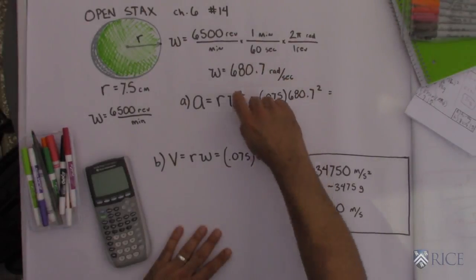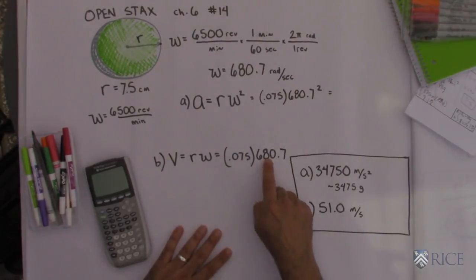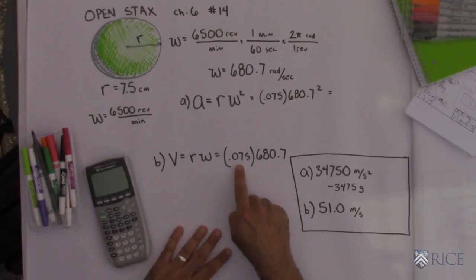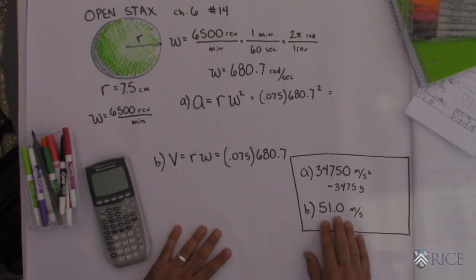Well, I already found omega, plug that in right there, multiply by the radius, and it turns out that the linear speed of a point on the edge is 51.0 meters per second.